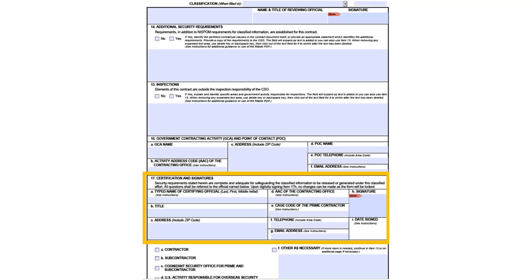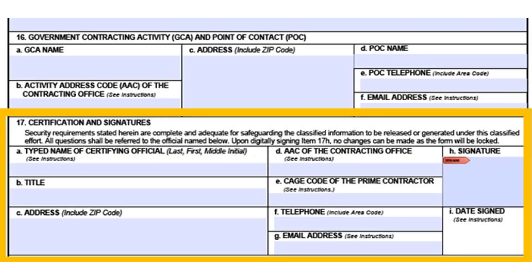Finally, there is the certification block highlighted in orange. This is where the contracting officer or designee can execute the form in Block 17. The form is not completed until it is signed. Once electronically signed, the PDF version of the form locks. The contracting officer can delegate the certification block on this form in accordance with the requirements found in U.S. Air Force Industrial Security Policy. Please contact your servicing security manager for additional details on what is required to properly delegate the DD Form 254 certification.